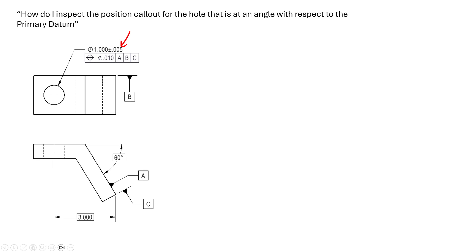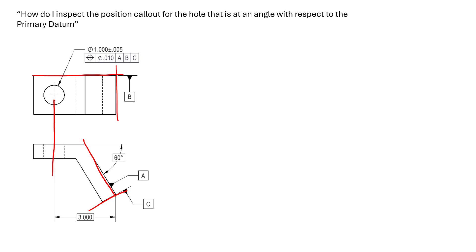Typically when we have drawings where the hole in question is being controlled with position, the primary datum is more often than not the surface that the hole originates from — so we're controlling perpendicularity back to that primary datum. But as you can see in this scenario, the primary, secondary, and tertiary datums create a unique datum reference frame. More specifically, the relationship between the axis we're controlling and the primary datum can be trigged to be 30 degrees based on our basic dimensions.